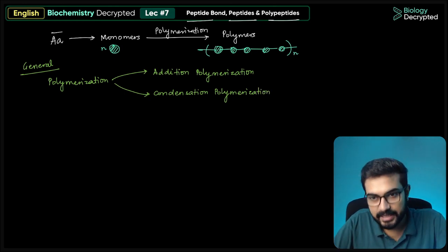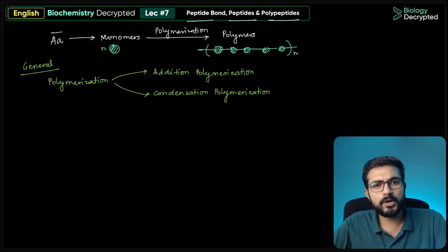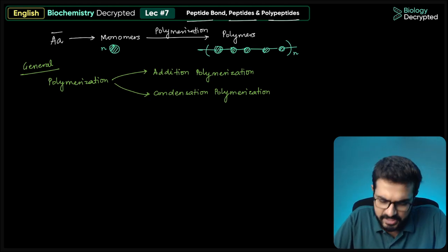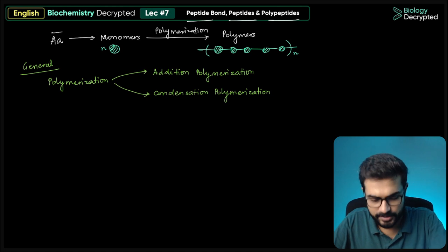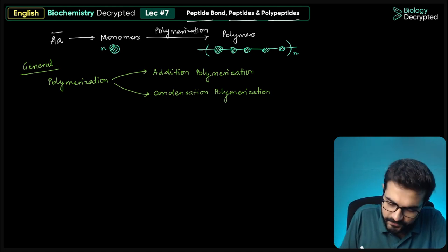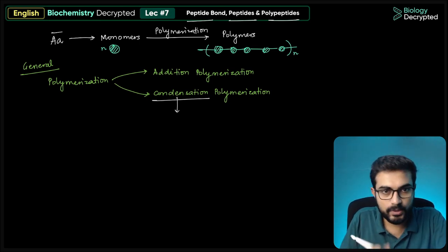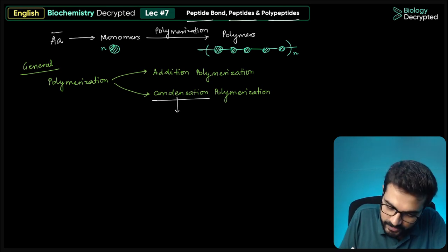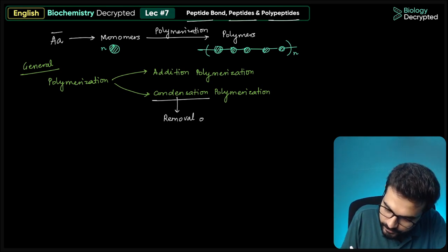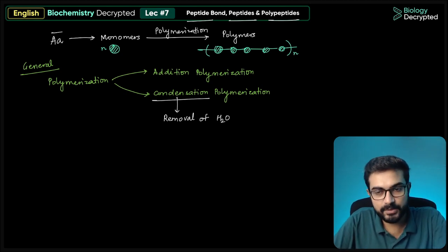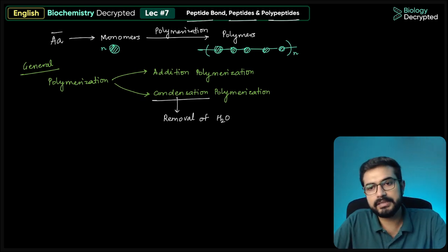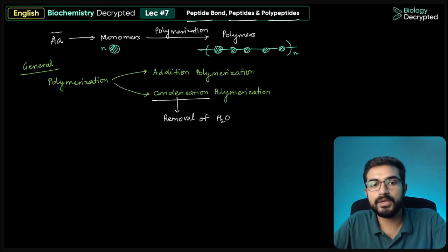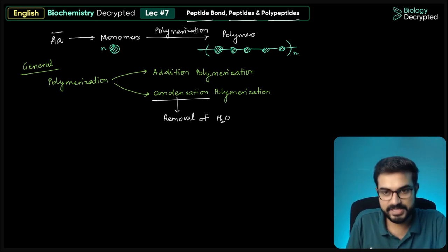Addition polymerization follows a free radical mechanism and is generally observed when making synthetic polymers. In biological systems, what we find most commonly is condensation polymerization. In condensation polymerization, specifically, removal of water takes place in most cases. More generally, it's the removal of some molecule, but here we are specifically talking about removal of water.